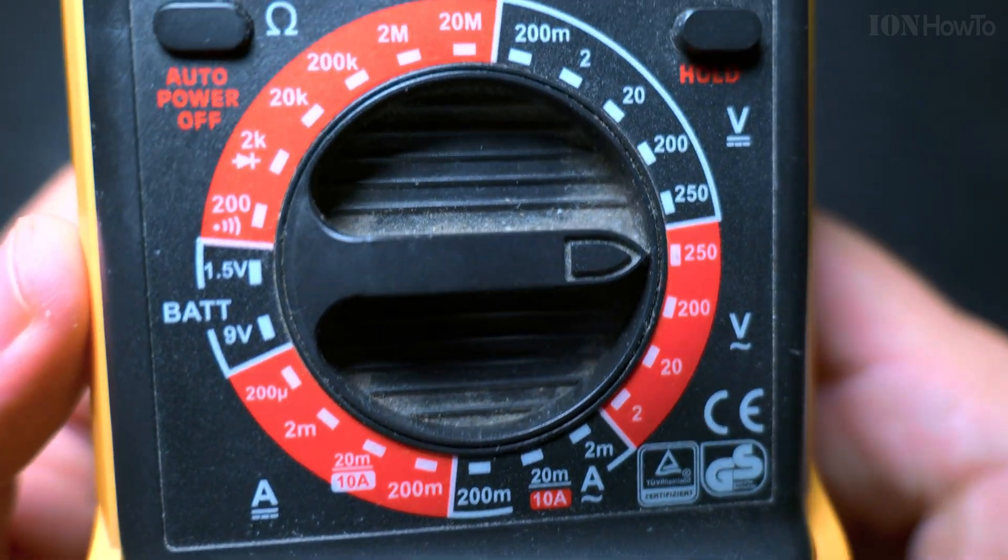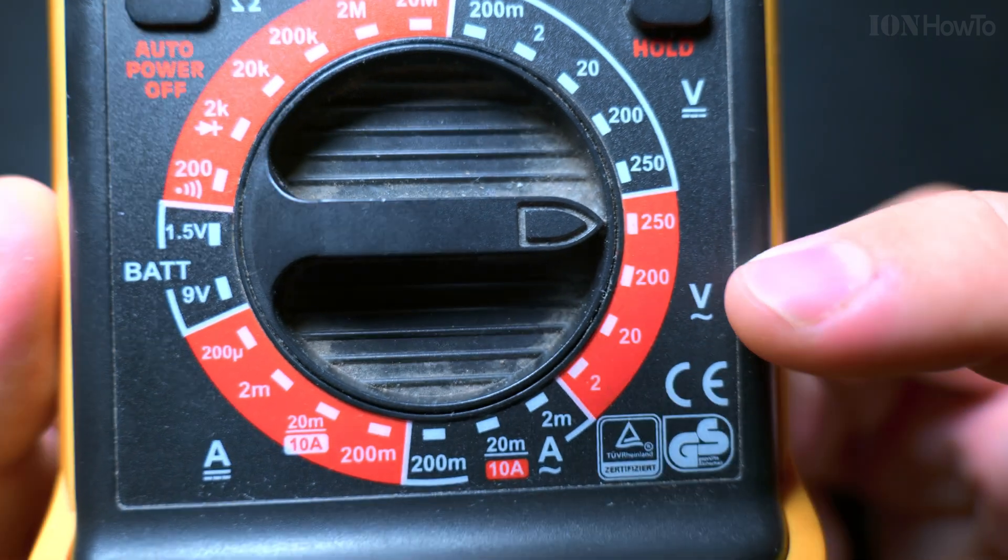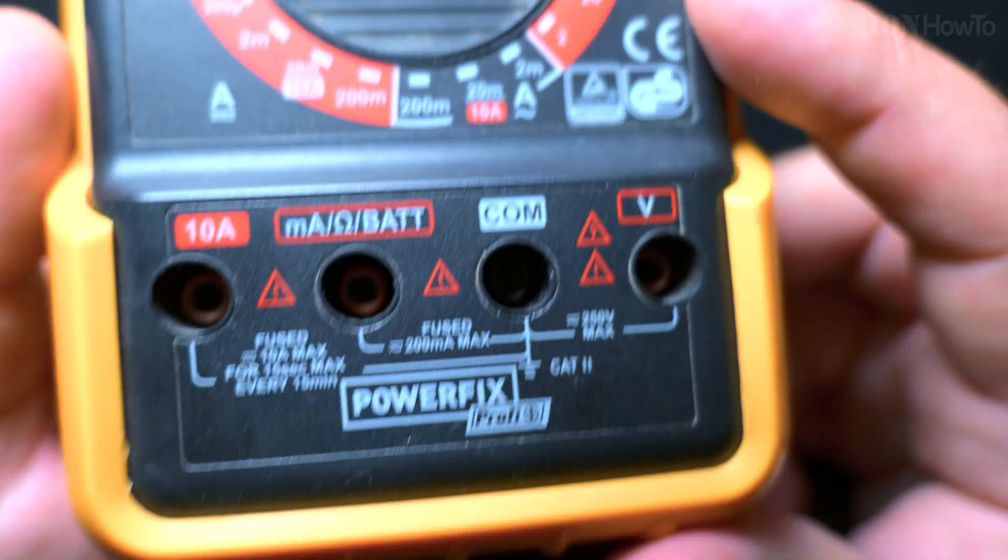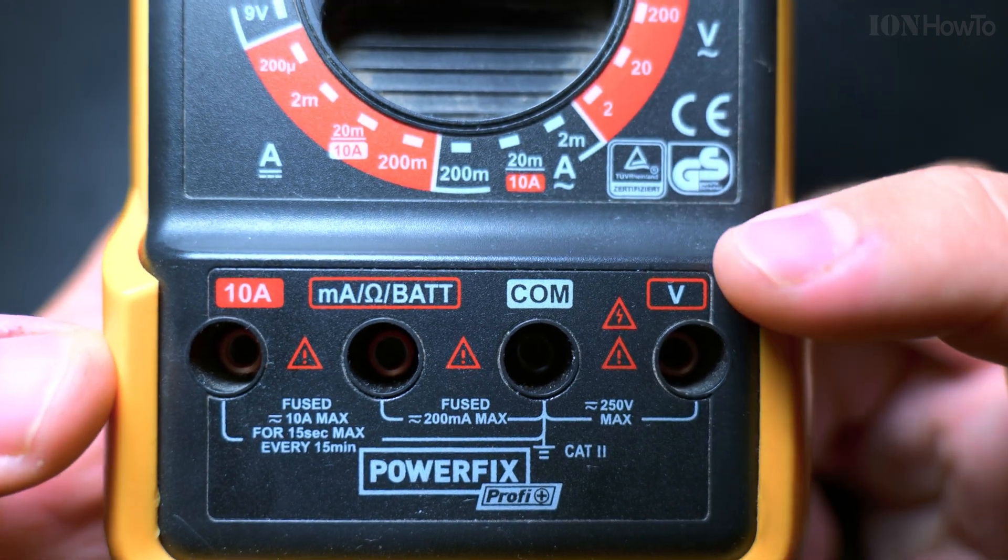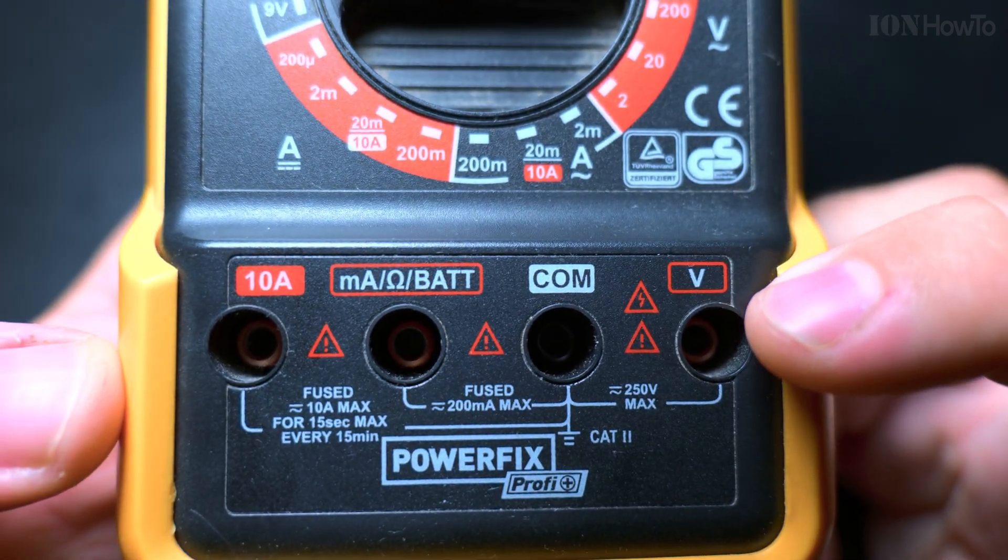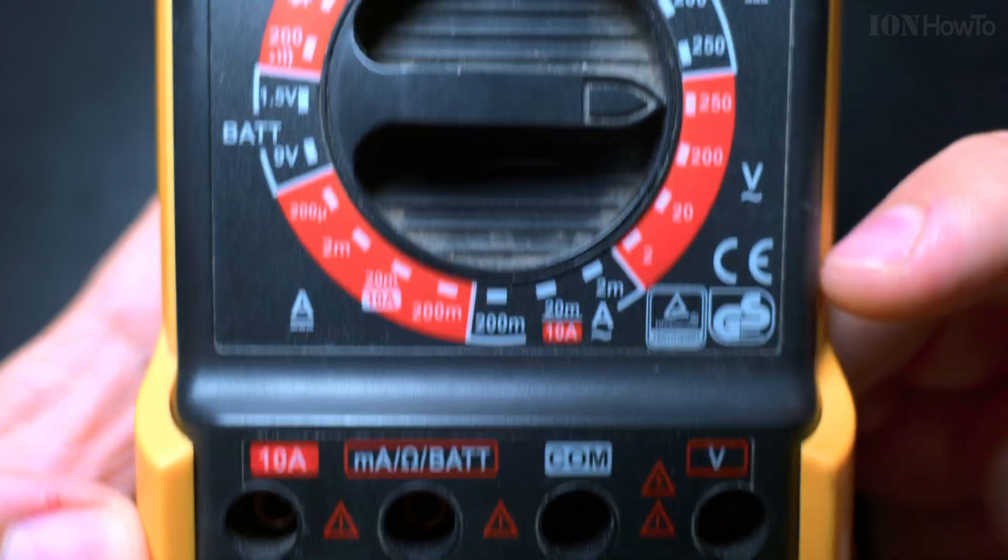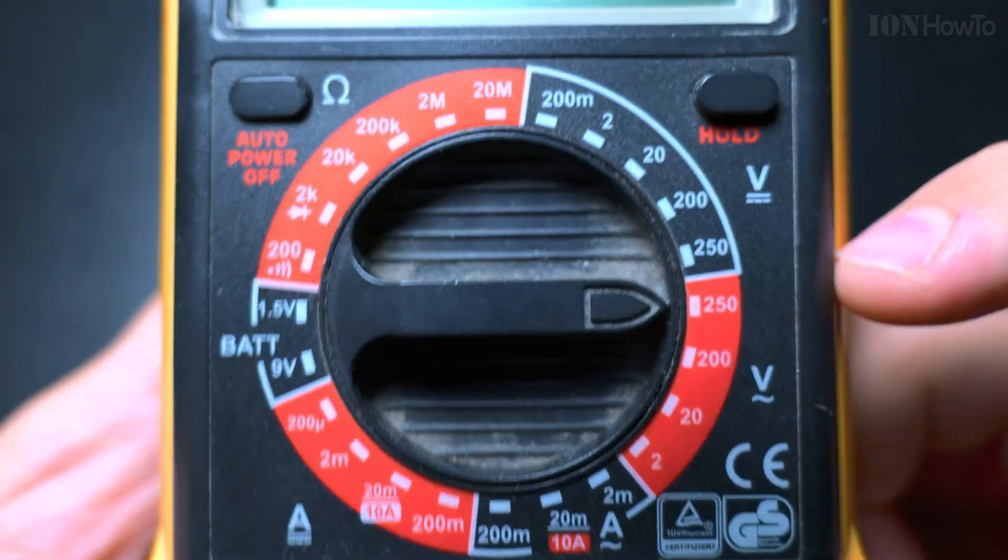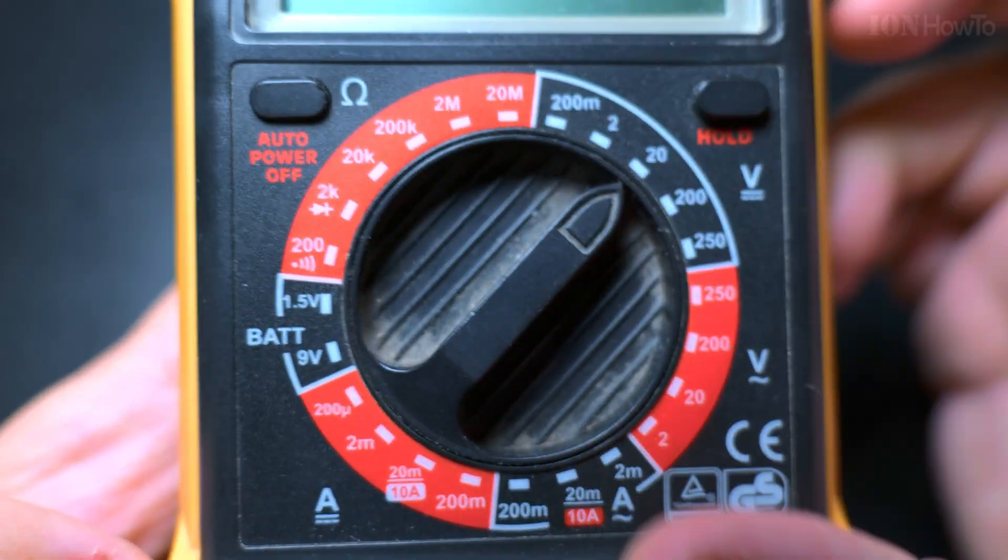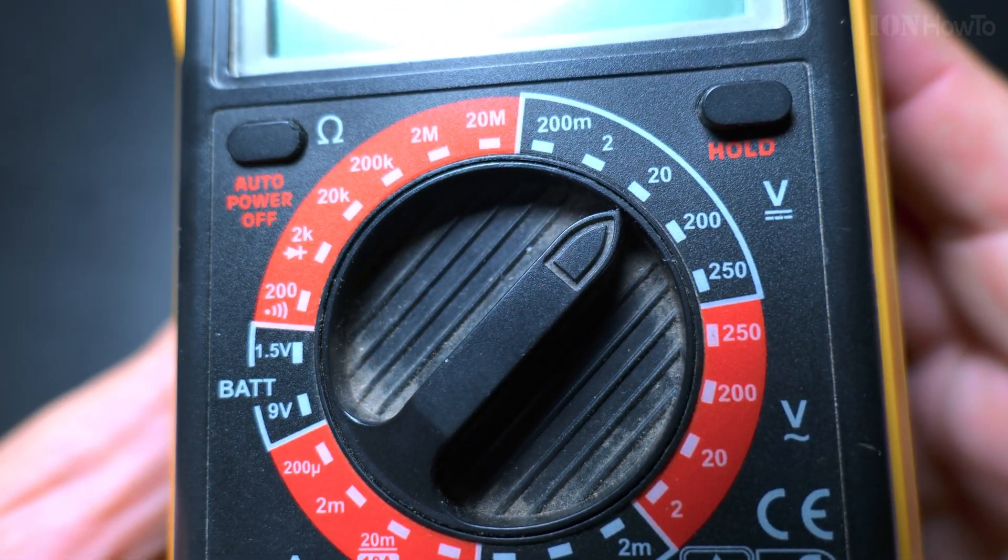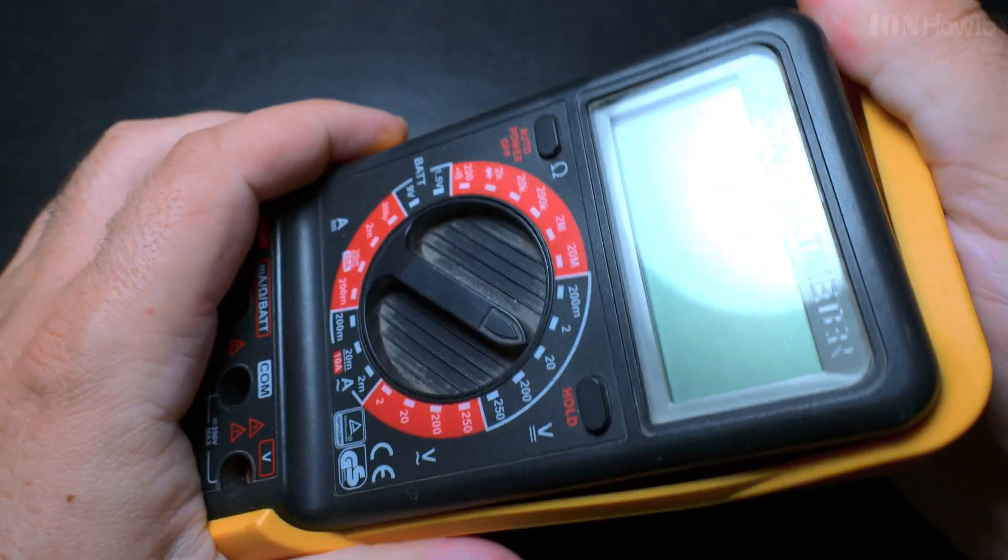This is what you would use if you would check the terminals in your socket, in the power socket, which you should not do really - it's dangerous. But that's the place to check it, the volts V and the COM, and say to 250 AC voltage to measure the amount. And this is the voltage in DC continuous.